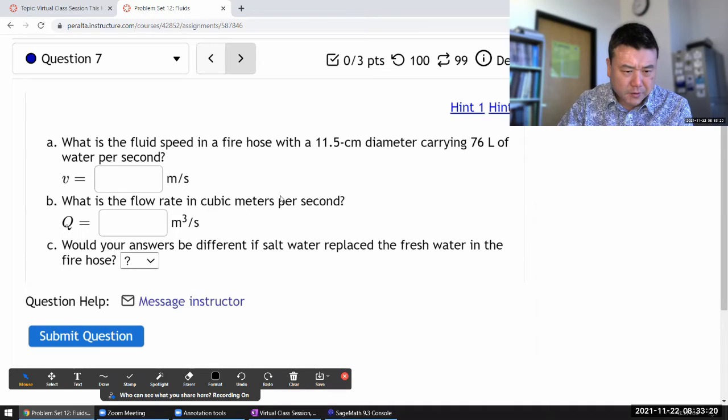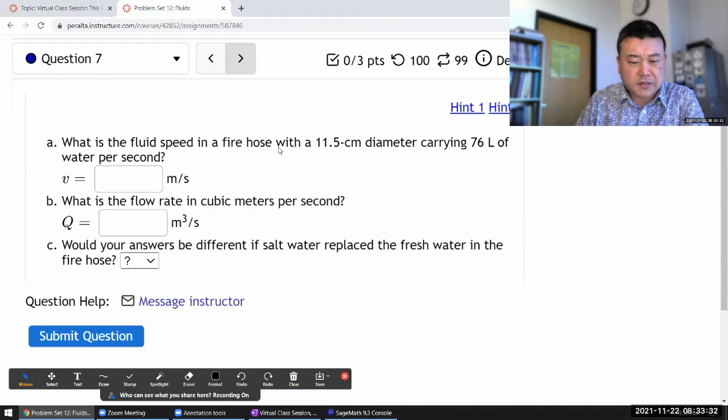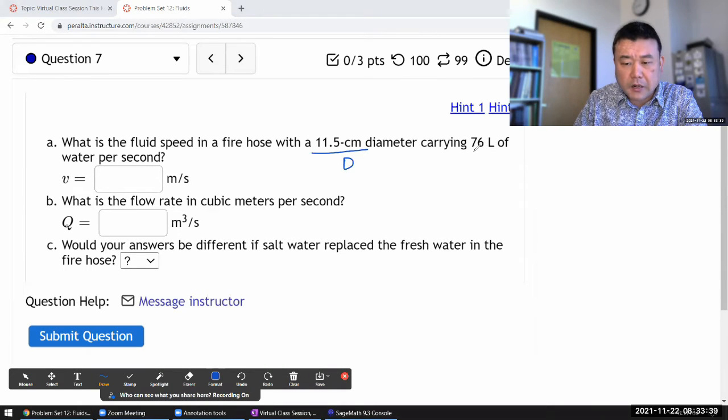Okay, so this question is a multi-part question. I guess I'll just start with part a and go through it. It asks what is the fluid speed in a fire hose with some diameter carrying some volume of water per second.